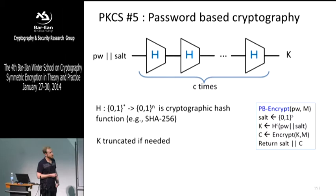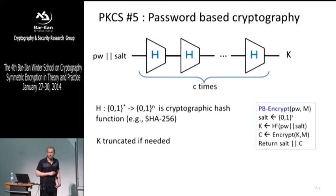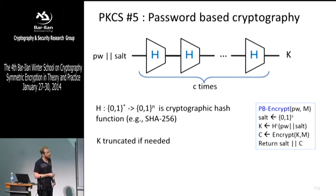PKCS5 is the de facto standard for how we do password-based encryption in practice. It's really simple: we have password and salt, we hash it c times to generate a key, and then use a regular cryptographic encryption scheme — CBC mode in the spec. You pick a fresh salt every time, which acts like a random IV. Then you hash and get a key, so every time you encrypt you're getting a new key. If we decrypt with the wrong key and look at the resulting plaintext, how do we tell whether it's real or fake? If it's valid ASCII.